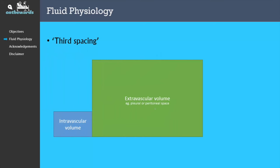There's another concept I'd like to talk about, which is the idea of third spacing. In this diagram, I've represented a situation where there is low intravascular volume but high extravascular volume. Such a situation often comes about in, for example, decompensated liver failure. In this situation, there are low levels of albumin, which means that there is a large fluid shift into the extravascular space from the intravascular volume.